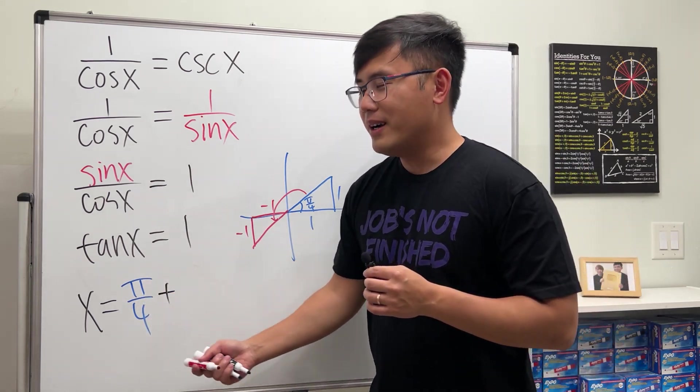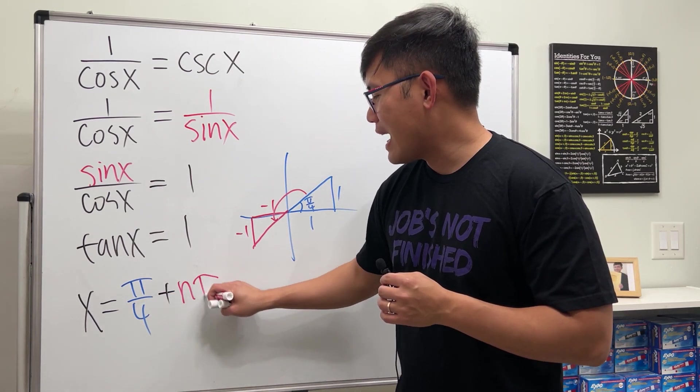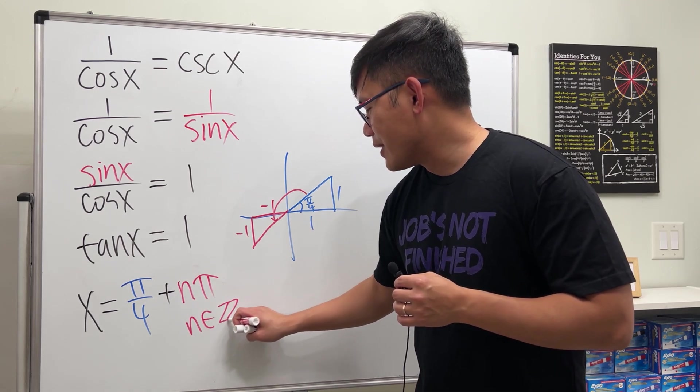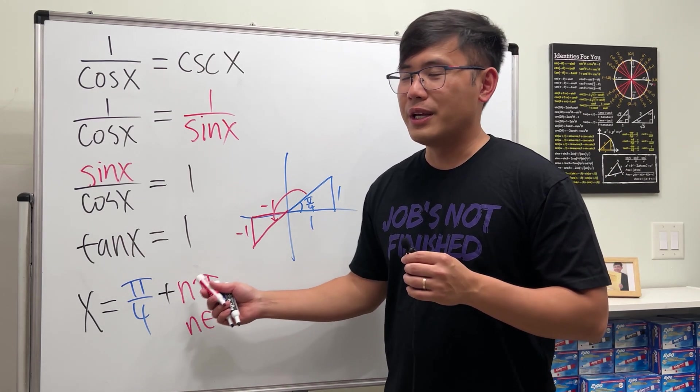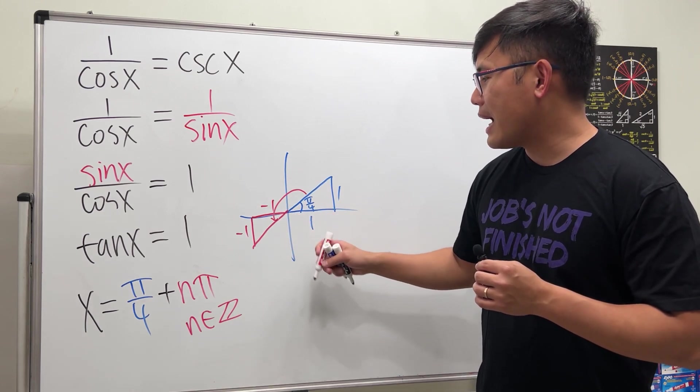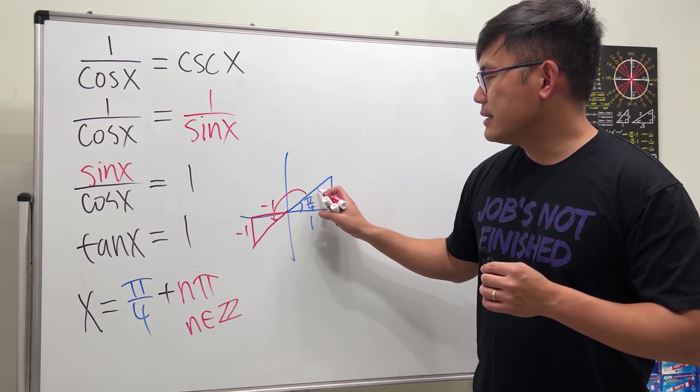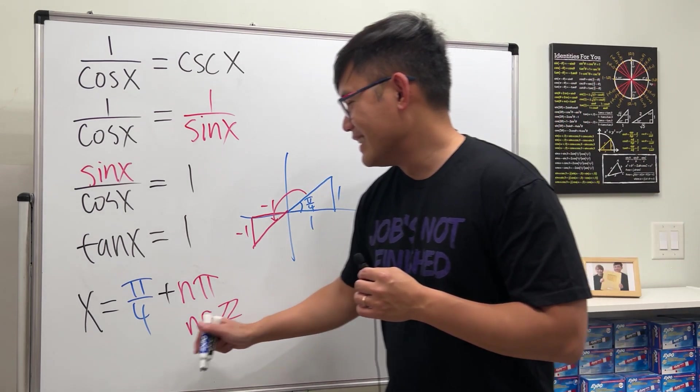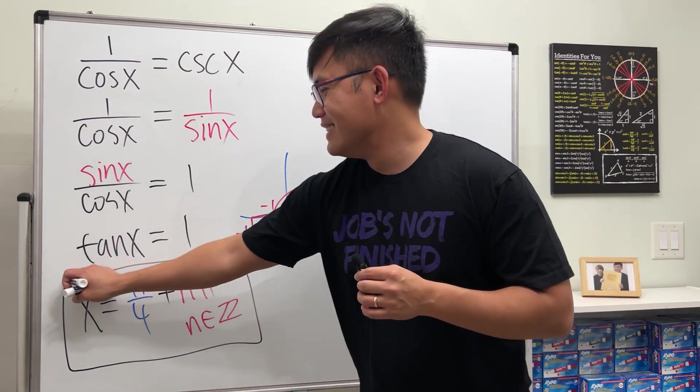x = π/4 + nπ, and that will indicate that n is an integer, because this means you can just keep adding or subtracting π in order to get to this or that terminal side. Alright, so this is it.